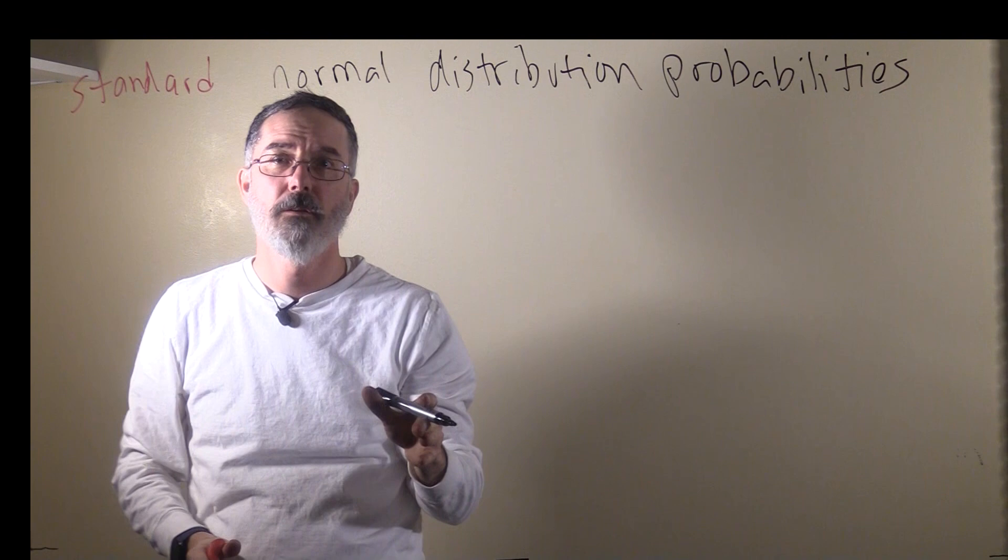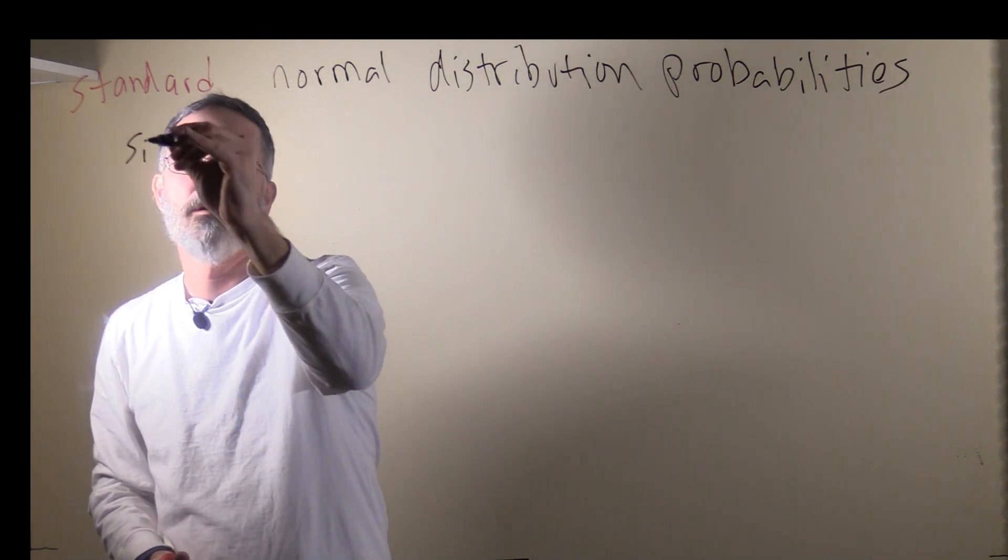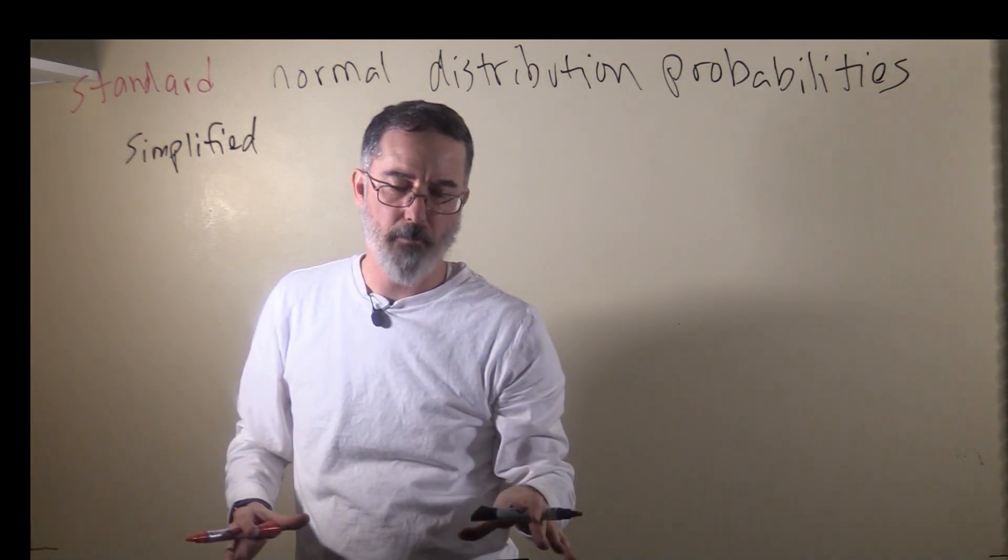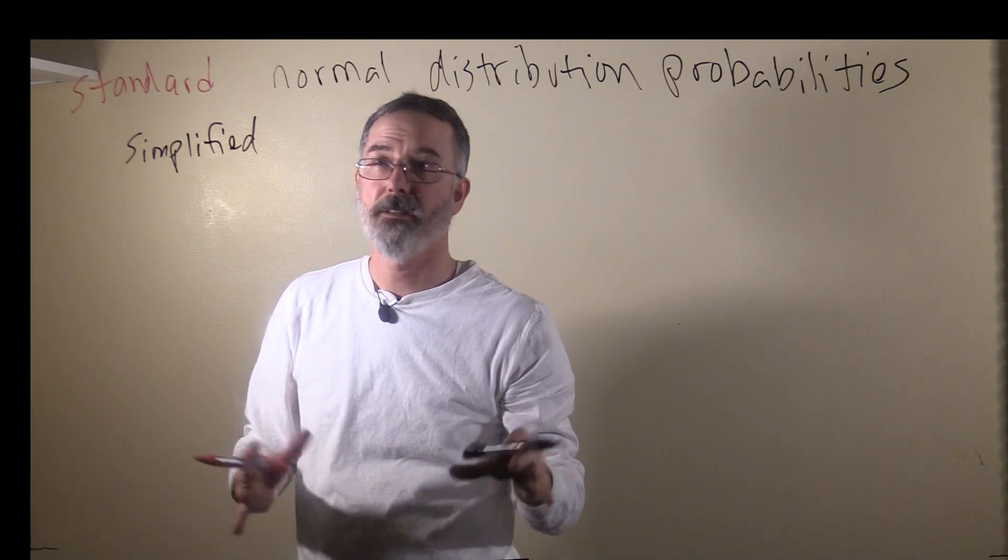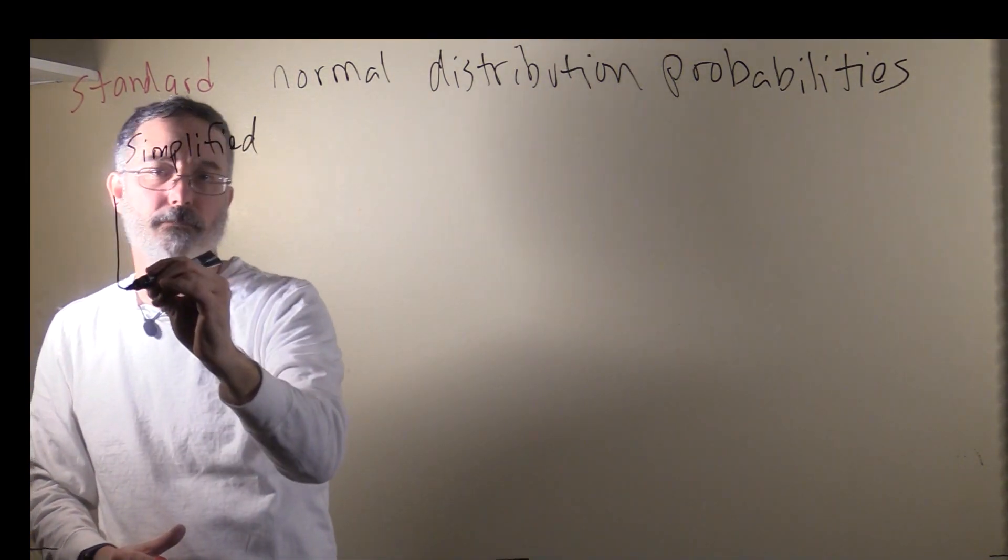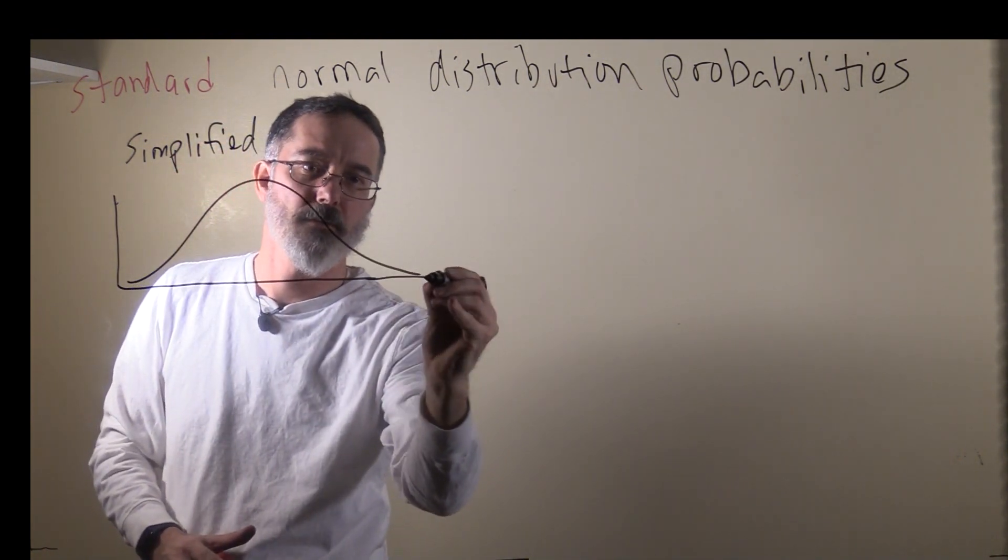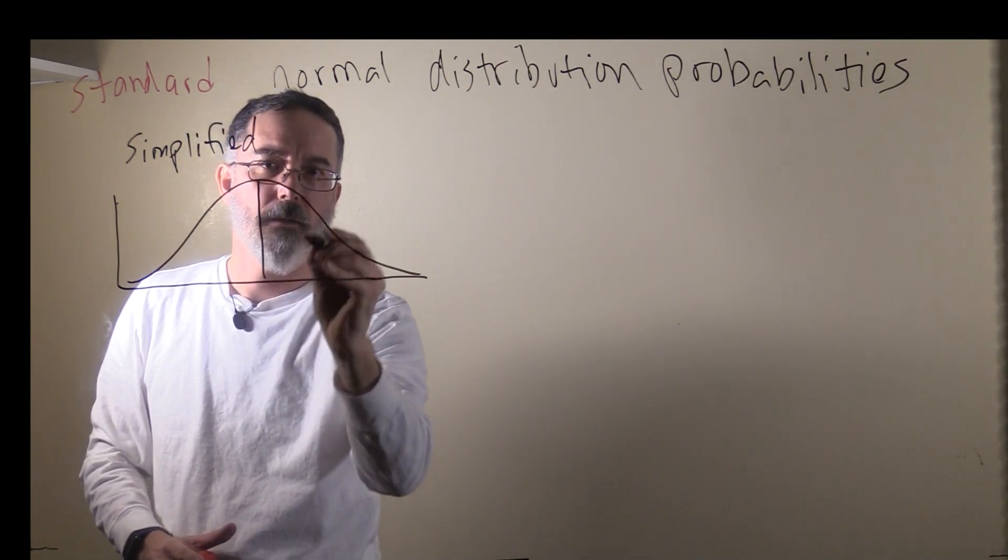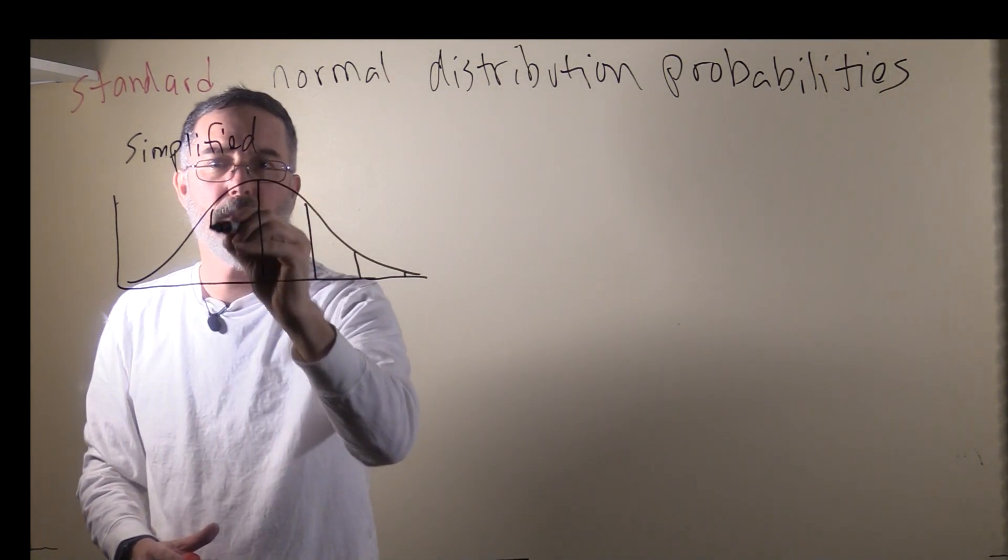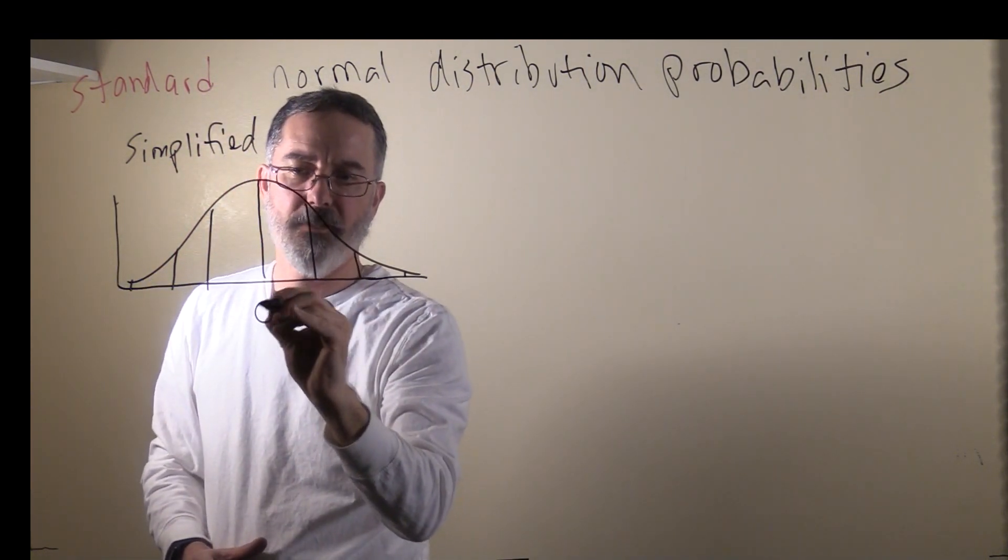We're going to start off when we're talking about standard normal distribution probabilities with a simplified version. We'll get into more complicated versions in a little bit, but for now, just to introduce this idea, we're going to start with a simplified version. For that, we'll draw our normal distribution and try to draw lines where each of the z-scores are.